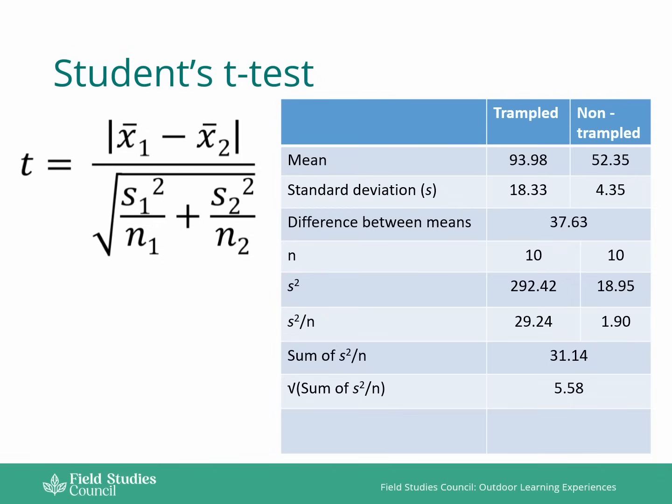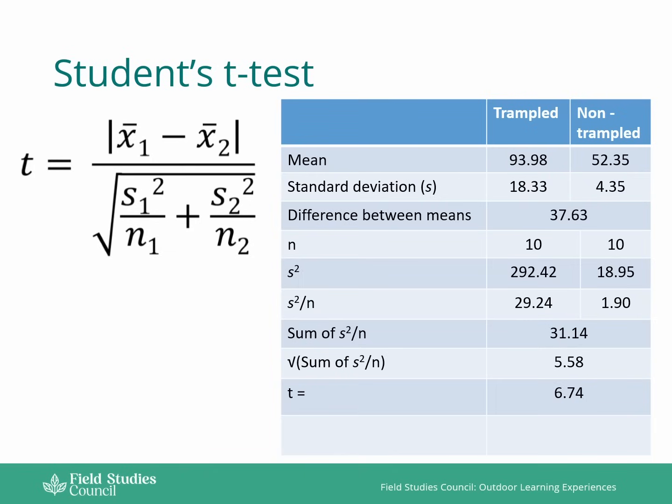So we're now going to divide the difference between the means by that square root of the sum of standard deviation divided by n. So we've just got two simple numbers, one divided by the other. So 37.63 divided by 5.58 should give us 6.74, and that's our calculated t value for the student's t-test.